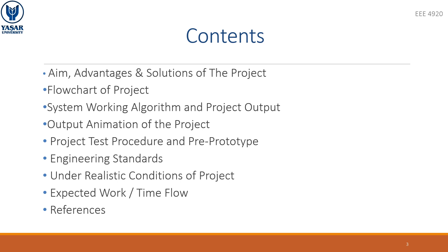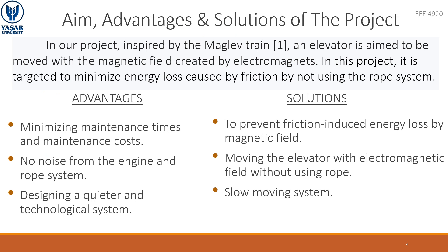These are the contents of the project. I will start by the aim of the project. Our main aim in the elevator project, which moves with the magnetic field inspired by the working principle of the Maglev train, is to minimize the energy loss caused by friction by not using the rope system.